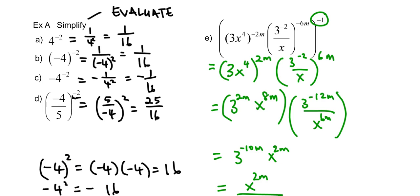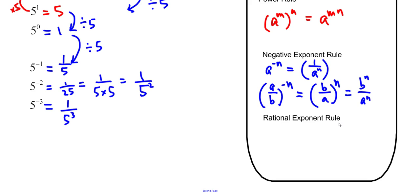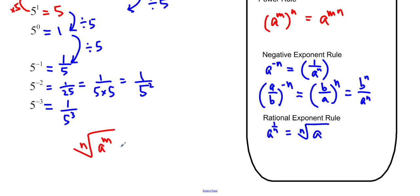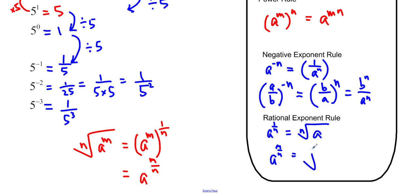Let's write these into our rules. a to the 1 over n is equal to the nth root of a. From there, the nth root of a to the m equals a to the m to the 1 over n, and using the power rule that equals a to the m over n. So a to the m over n equals the nth root of a to the m. These blue rules are the new ones you need to memorize.